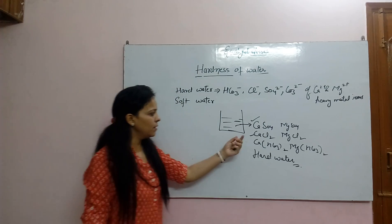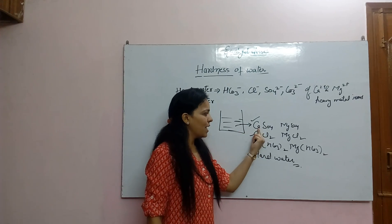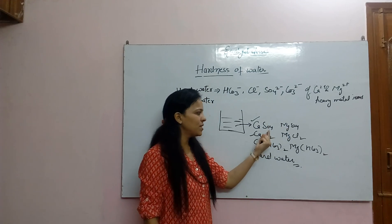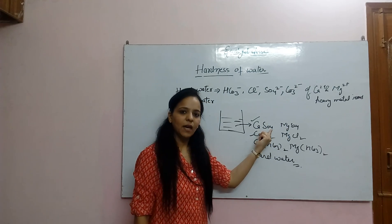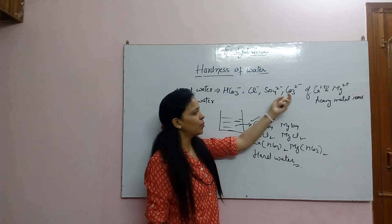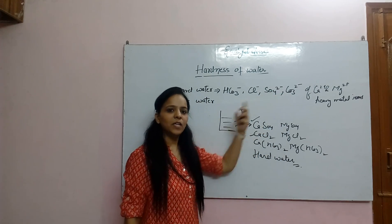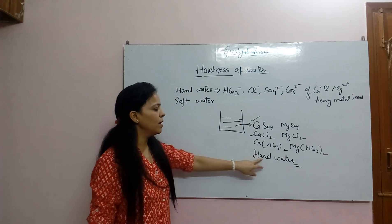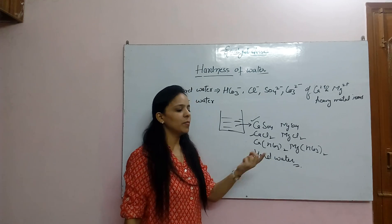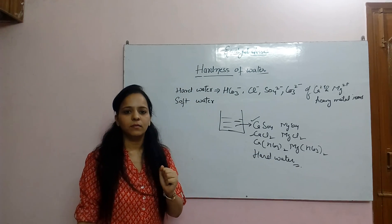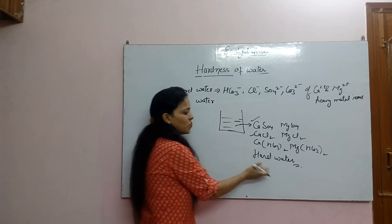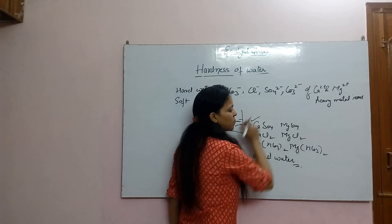मतलब कि ऐसा पानी जिसमें calcium और magnesium के sulfate, chloride, bicarbonate, या carbonate ions present हों — ऐसे पानी को हम hard water कहते हैं, जिसको हम घरों में खारा पानी कहते हैं। ये सारे salts hardness के लिए responsible हैं।